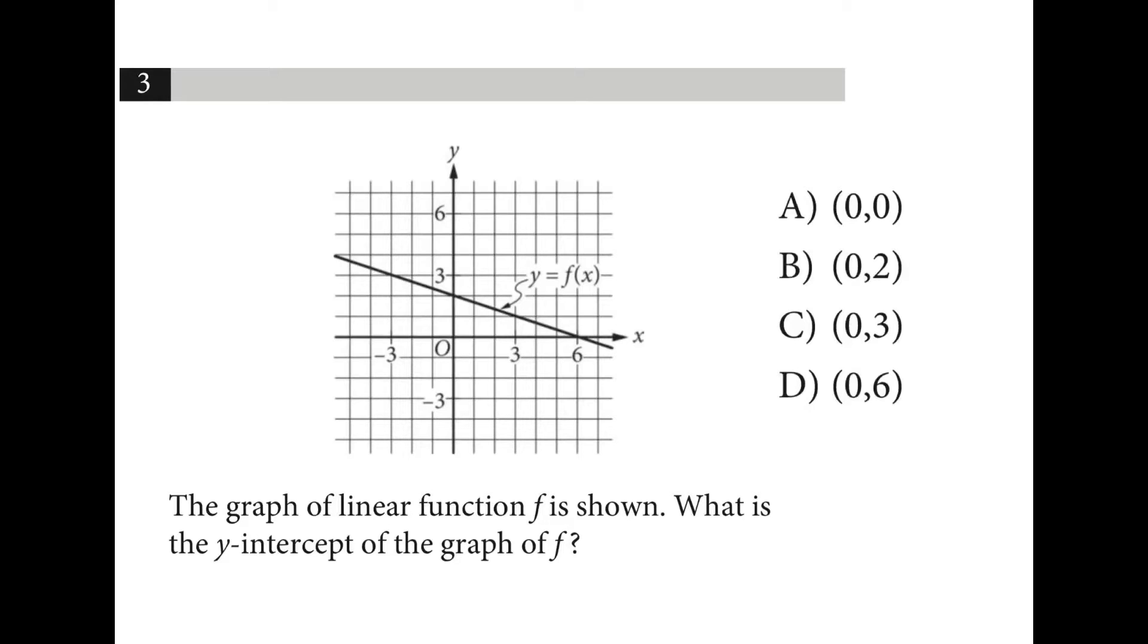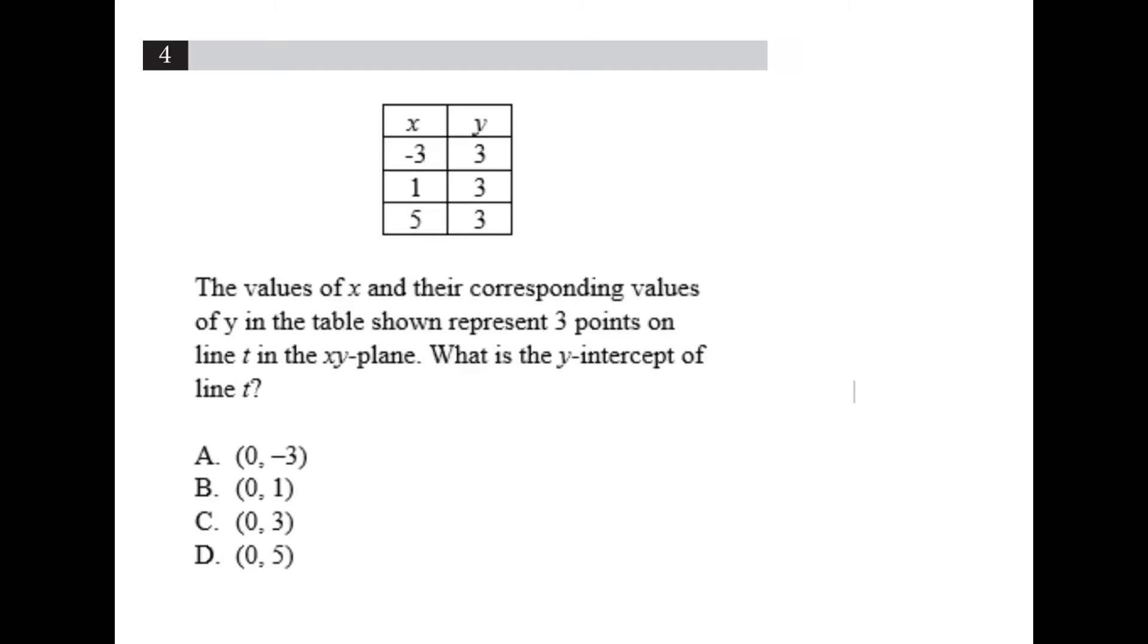The graph with linear function f is shown. What is the y-intercept? That's where it crosses the y-axis, which is here at coordinate. The y-intercept is when x is equal to 0, y is equal to what? We can see that as we go up 4, we're going to stay the same. That's because for all values of x, y is equal to 3. So c is our answer.